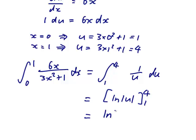So that's equal to ln of the absolute value of 4 minus ln of the absolute value of 1. And ln of 1 is 0, so we get ln of 4.